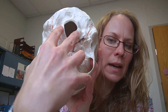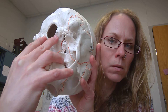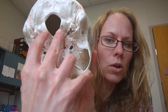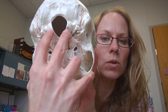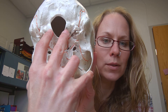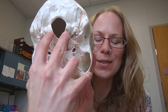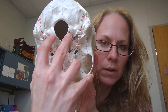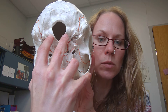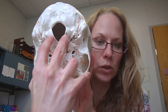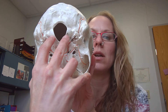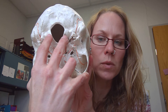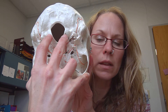On either side of the foramen magnum you have these large projections called the occipital condyles. A condyle is a smooth rounded articular surface, and articular means joined together — so it's a joint. This is where the skull sits on top of C1, which is the first vertebra in the vertebral column.